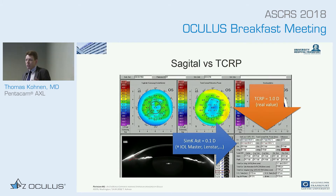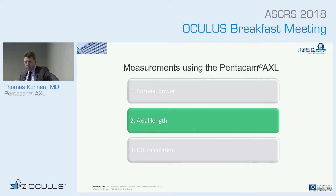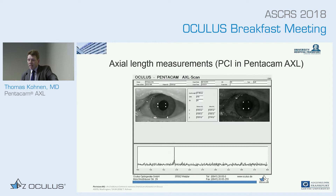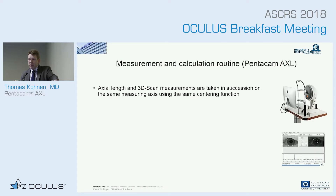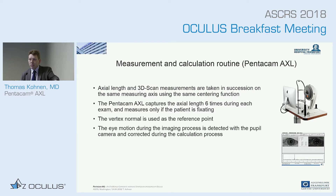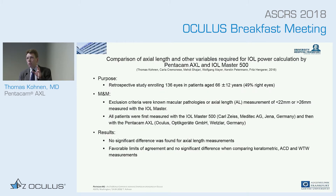On axial length: the gold standard is PCI optical biometry. These developments have occurred over the last 15 years, and Oculus has incorporated this measurement into their Scheimflug tomographer, putting both machines in one. The Pentacam AXL captures axial length six times during each exam and measures only when the patient is fixating correctly. The vertex normal is used as a reference point, and eye motion during imaging is detected with the pupil camera and corrected during calculation. In our first study, we compared Pentacam to IOL Master 500 and found no difference in axial length measurements.